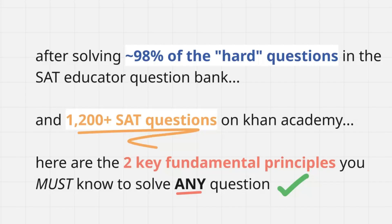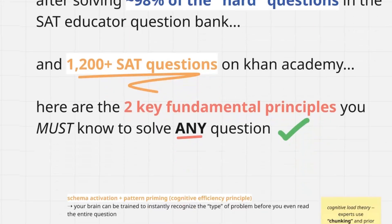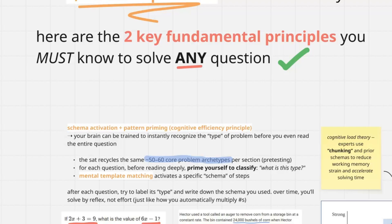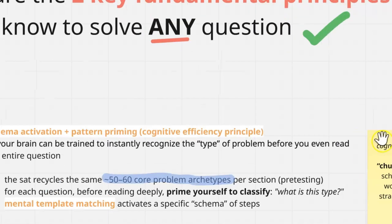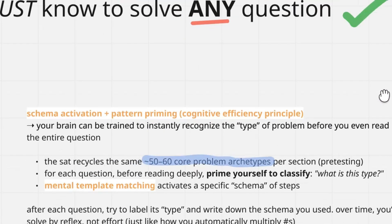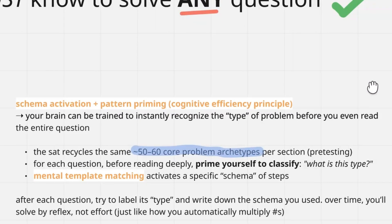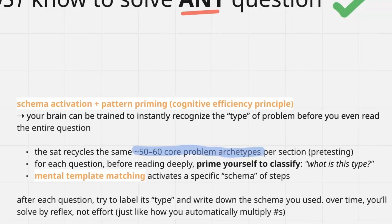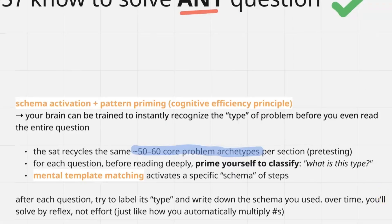From all those questions, I've learned two key principles that you absolutely must know to be able to solve any type of question. So what exactly are these principles? The first one is what we call schema activation. That basically just boils down to being able to recognize the problem type.